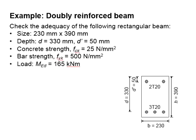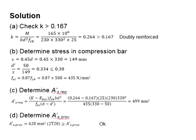You may pause the video for a while for you to work out the solution. To solve this question, first you need to compute the k factor. You found that the k factor is 0.264, which is more than 0.167. Therefore, you know that it is a doubly reinforced beam.